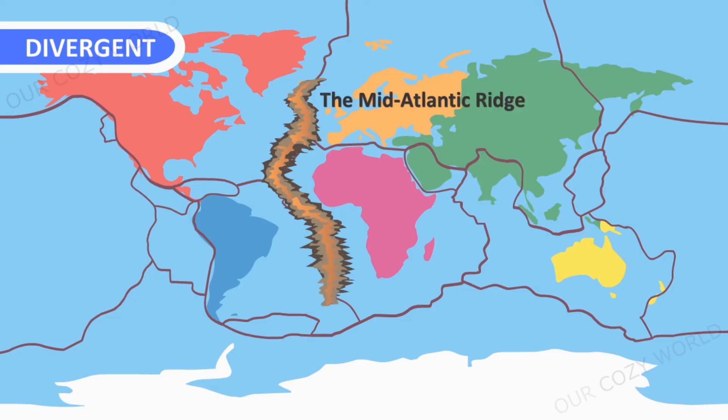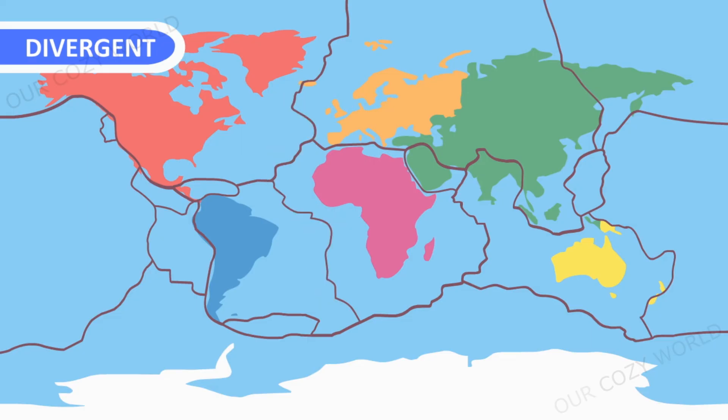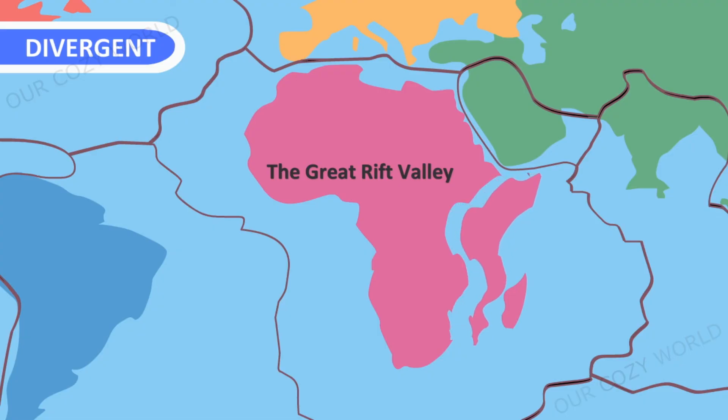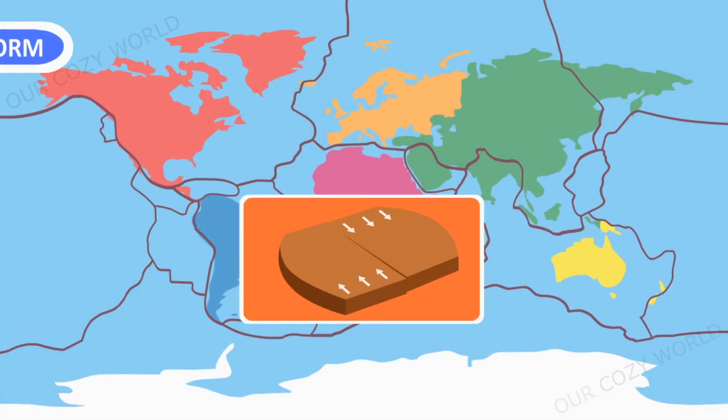As a result, mountain ranges are formed underwater — for example, the Mid-Atlantic Ridge located along the floor of the Atlantic Ocean. On land, rifts are formed — large faults in the Earth's crust, like the Great Rift Valley in Africa. If the plates there continue to drift apart, this could cause Africa to split in two over the course of tens of millions of years.